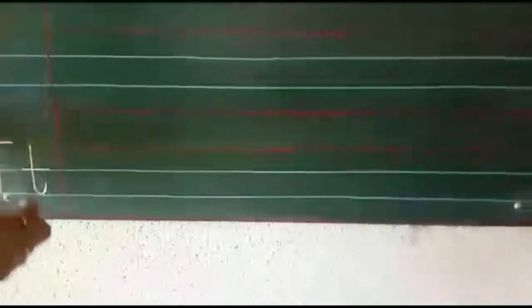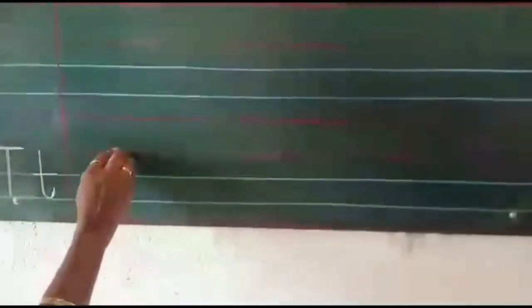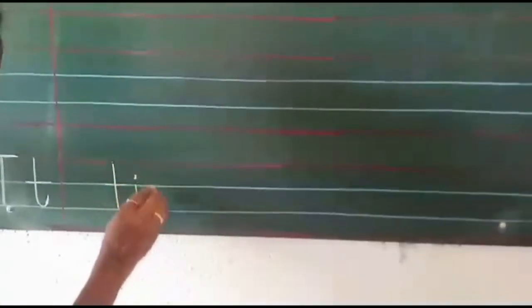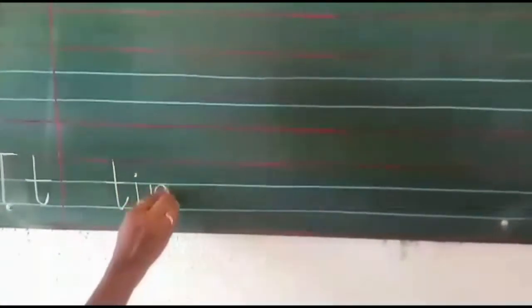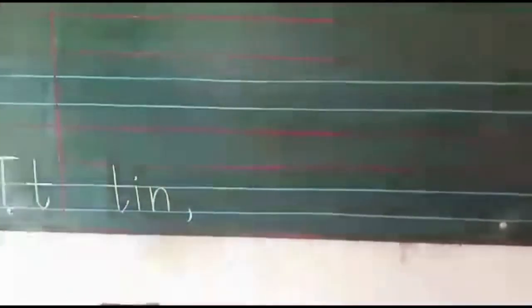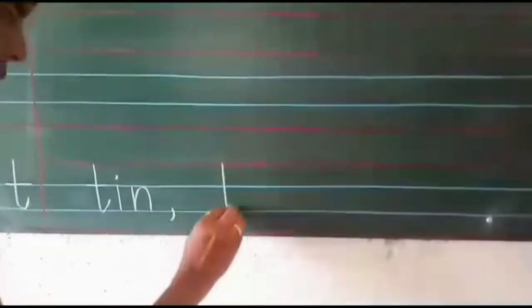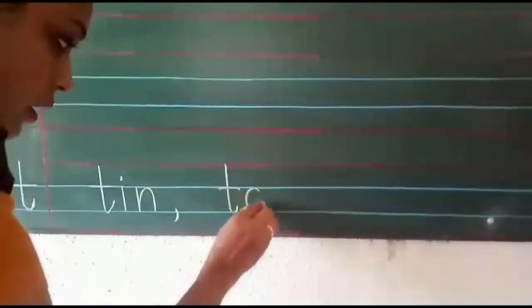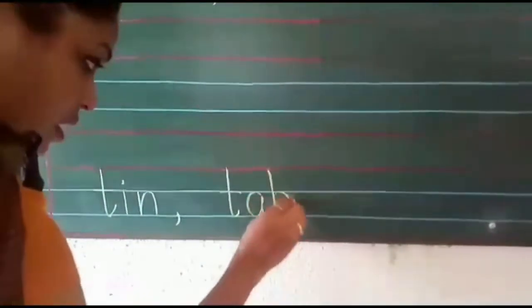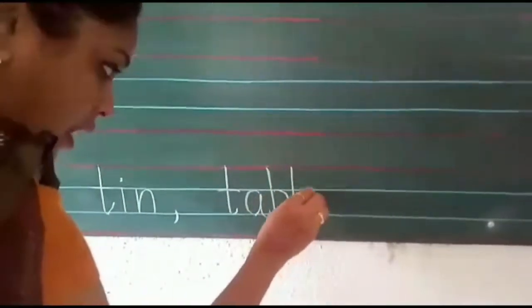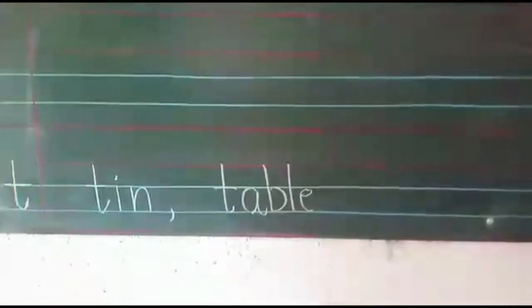So we will write the spelling of tin: T, I, N — tin. Comma, one finger space. T, A, B, L, E — table. Okay.